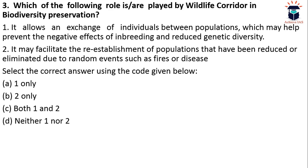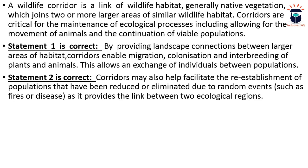The next question: which of the following roles are played by wildlife corridors in biodiversity preservation? First, they allow an exchange of individuals between populations, which may help prevent the negative effects of inbreeding and reduce genetic diversity. Second, they may facilitate the re-establishment of populations that have been reduced or eliminated due to random events such as fires or disease. Both statements are correct. A wildlife corridor is a link of wildlife habitat — generally native vegetation — that joins two or more larger areas of similar wildlife habitat.